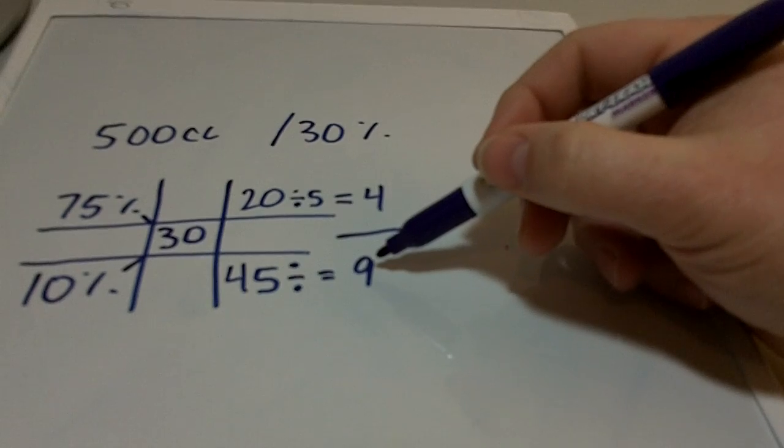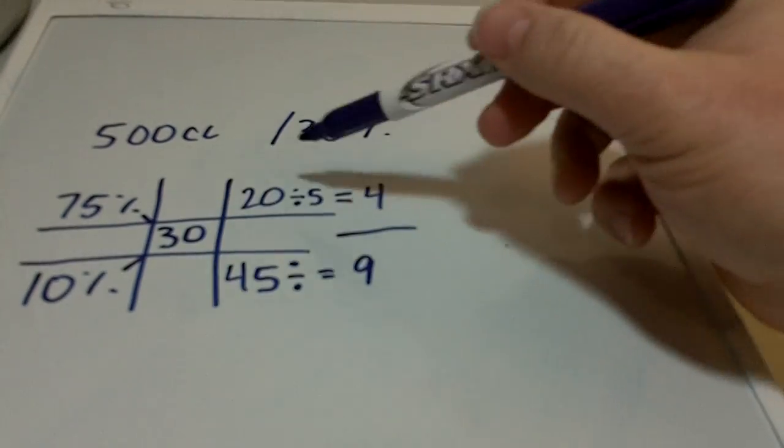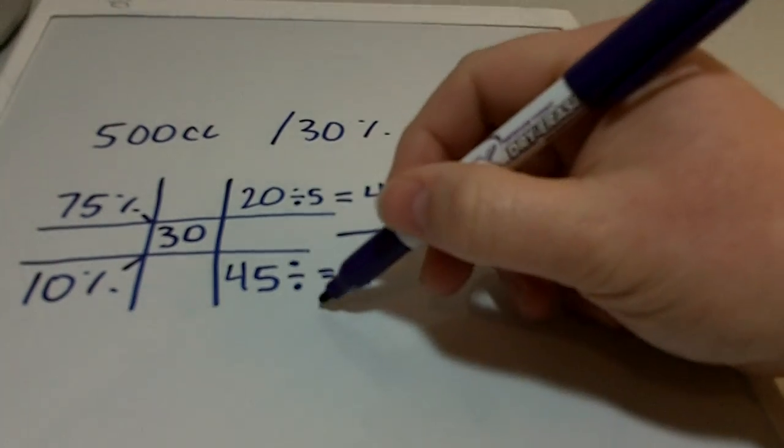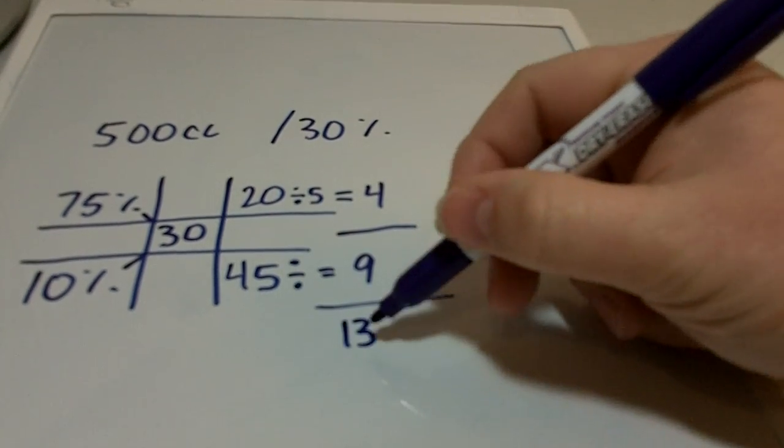So what this means is if I take 9 parts of 10%, 4 parts of 75% and mix it together, I would get 30%. So that gives us a total of 13 parts.